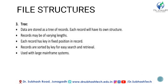The third one is tree. Data is stored as a tree of records. Each record will have its own structure. Records may be of varying lengths. Each record has a key in a fixed position in the record, and records are stored by key for search and retrieval. This is used with large mainframe systems.